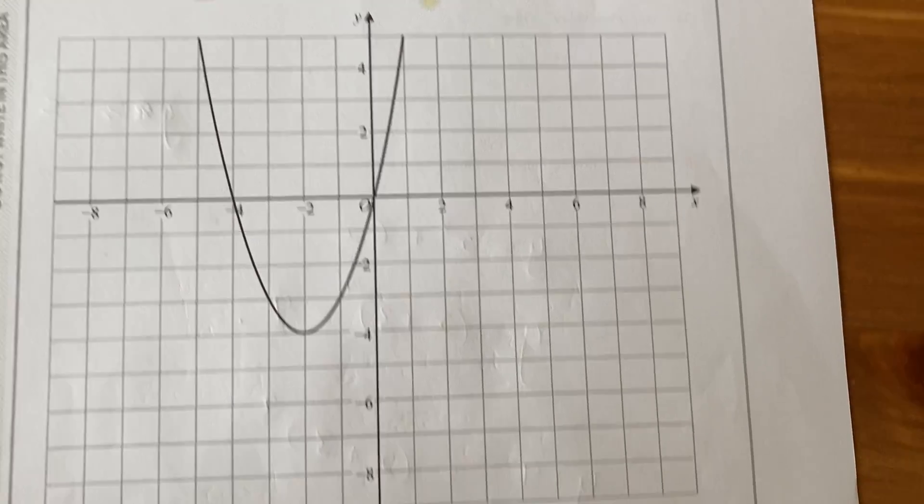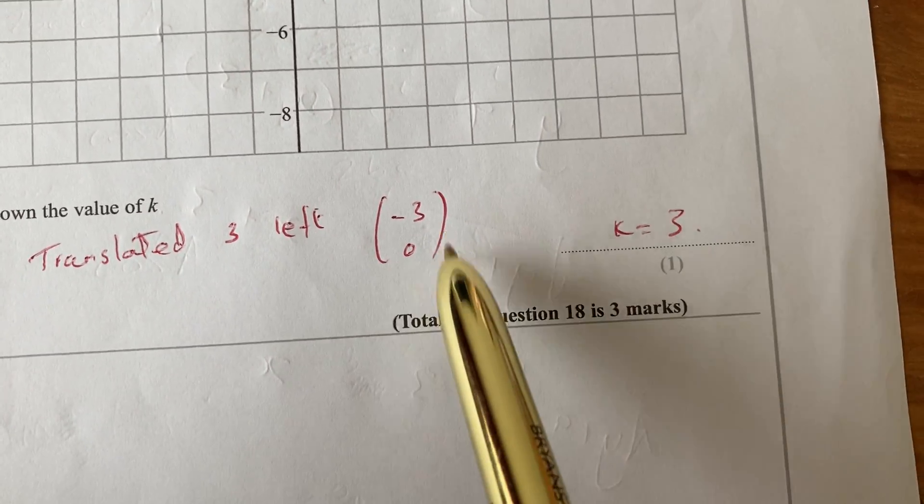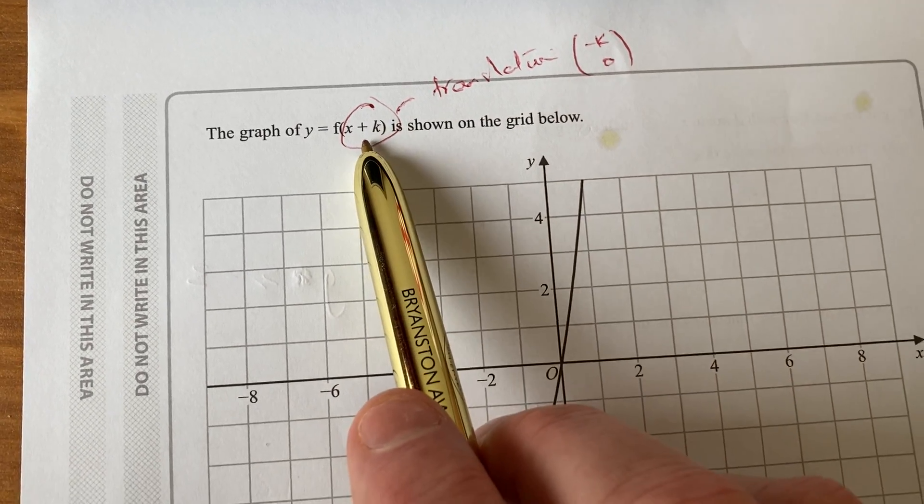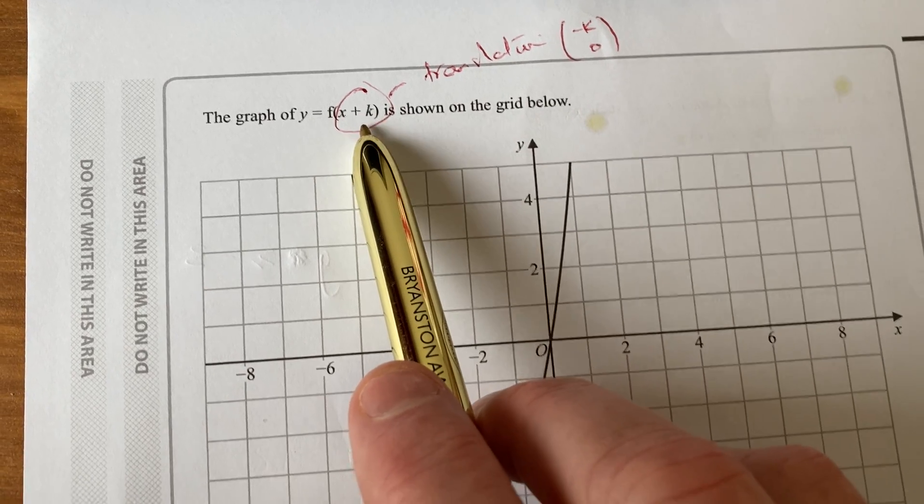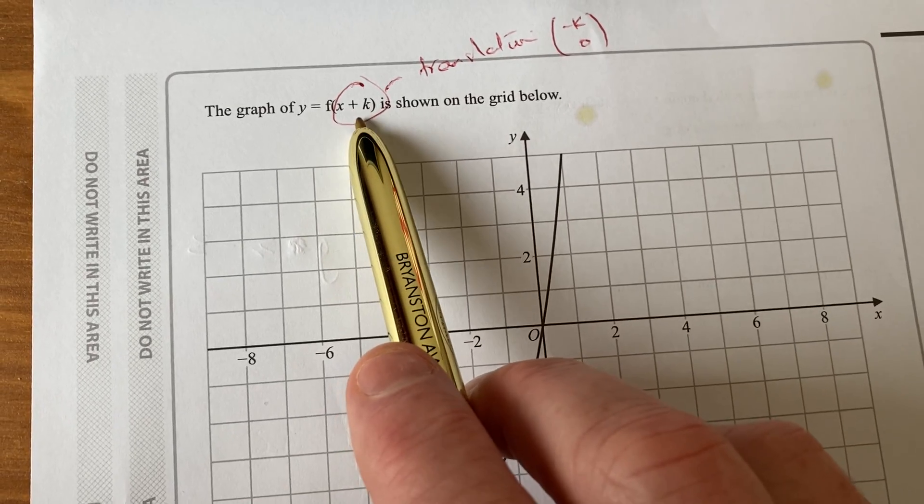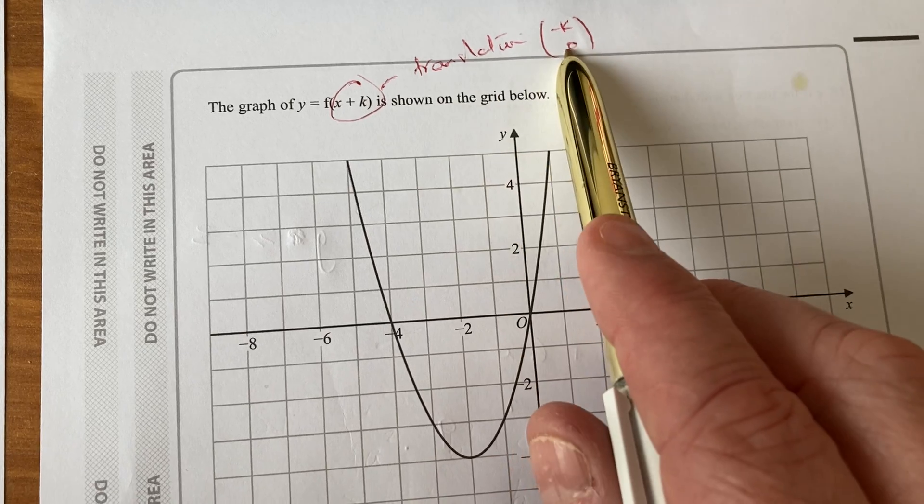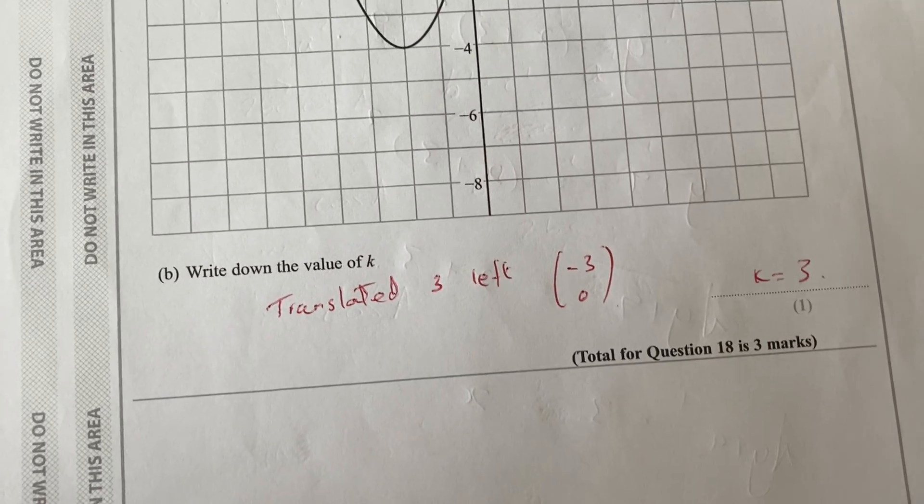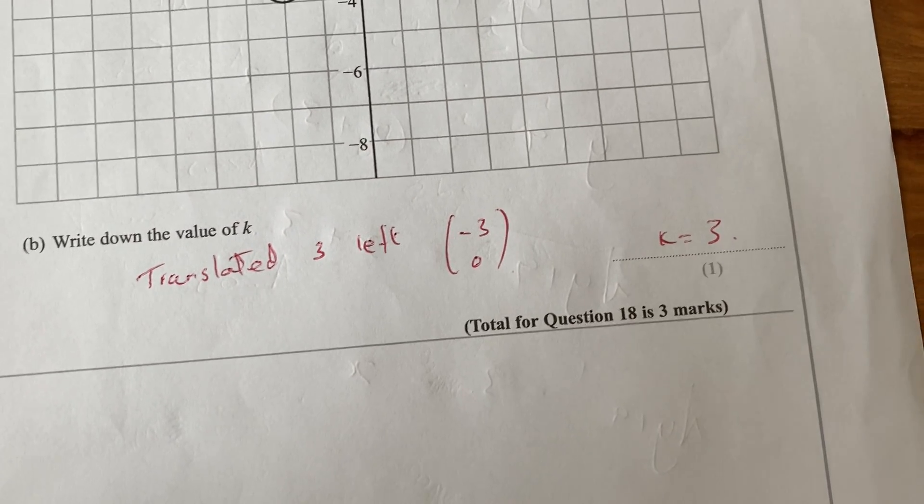That, as a translation, is minus 3, 0. Now, don't forget here, the k number, it goes in the opposite direction than you think. So x plus k inside the bracket means a minus k translation. So if we've got a minus 3 value, then the k number needs to be 3.